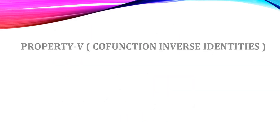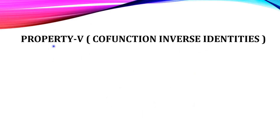Next we are going to see Property 5: Co-function Inverse Identities.